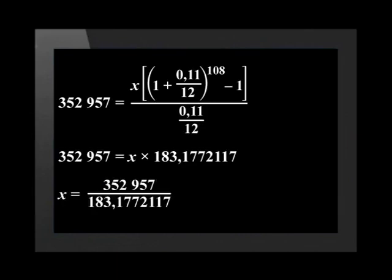We now divide both sides by 183.177, which will give us a final answer of R1,926.86. Masipumelele Primary School needs to invest R1,926.86 every month for 9 years in order to have enough money to purchase the new bus.